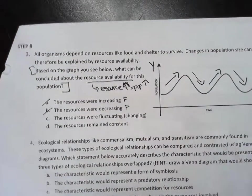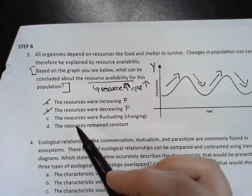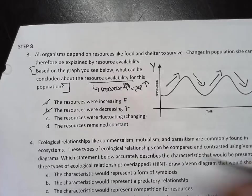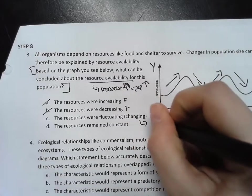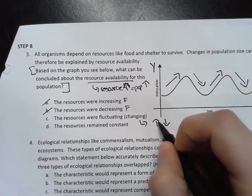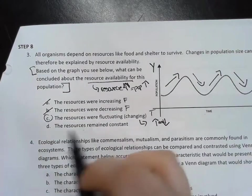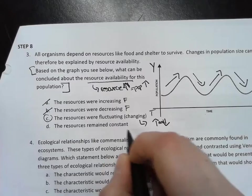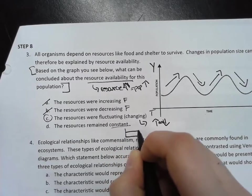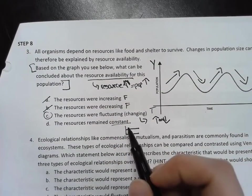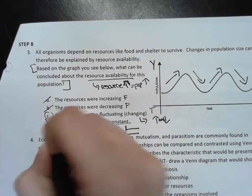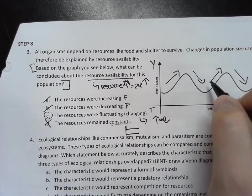So if I go through my answer choices: the resources were increasing - well they were some of the time but not all of the time, so this is false. The resources were decreasing - sometimes but not all of the time, so again this is false. The resources were fluctuating or changing - that means sometimes they're going up and sometimes they're going down, so yes this would match. And then just to be sure, the resources remain constant - constant would look something like this, that I have a flat line, nothing is changing. So this is not a match.